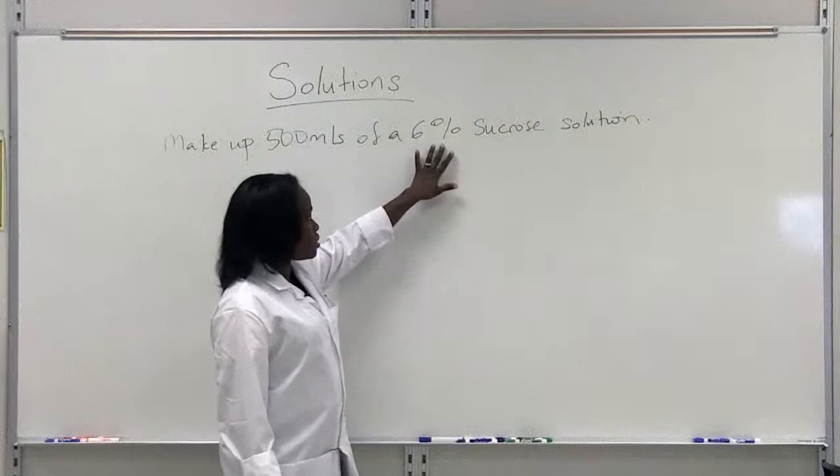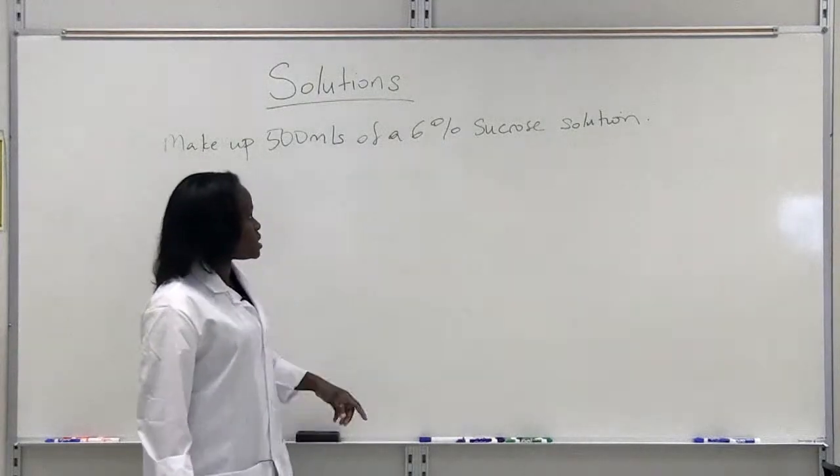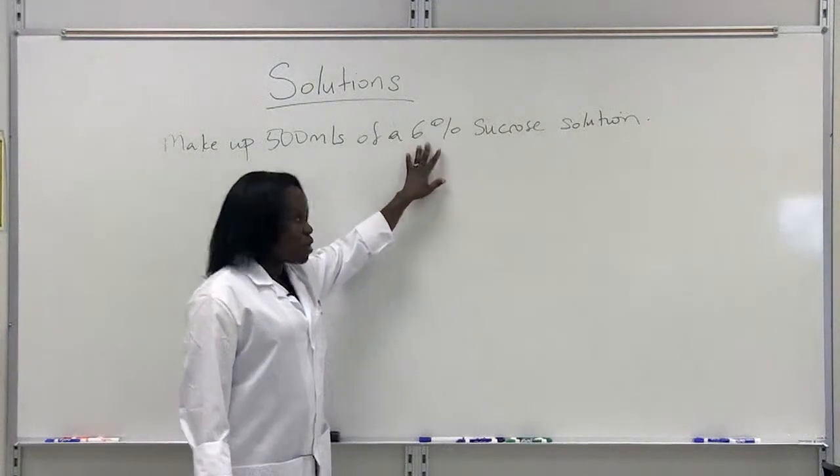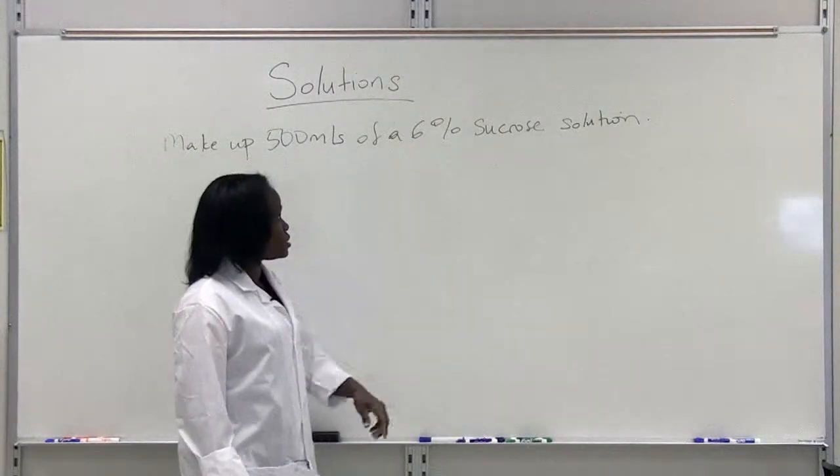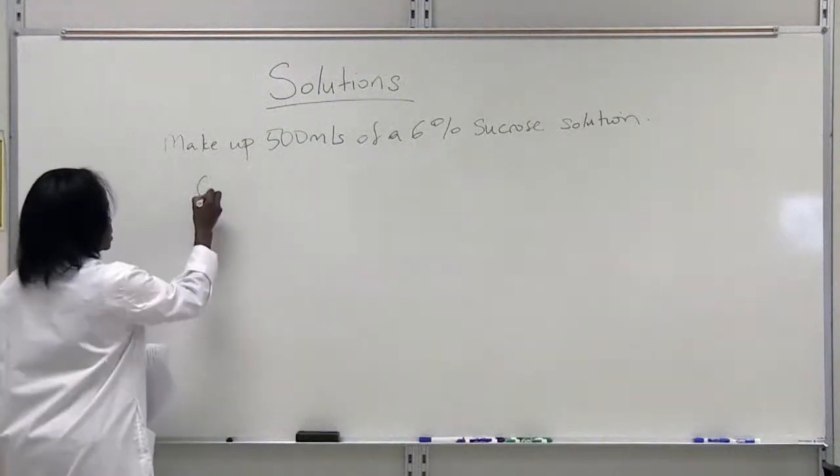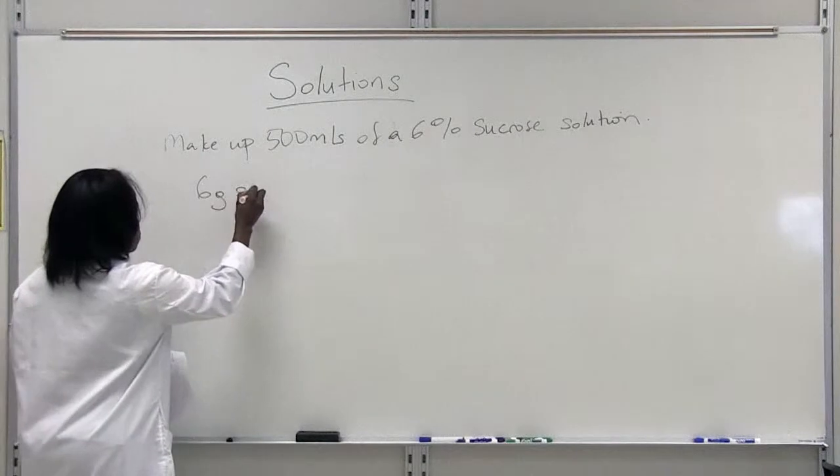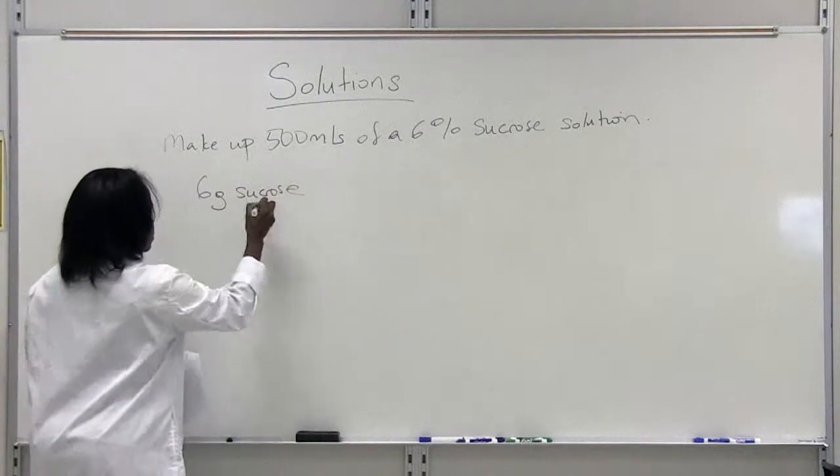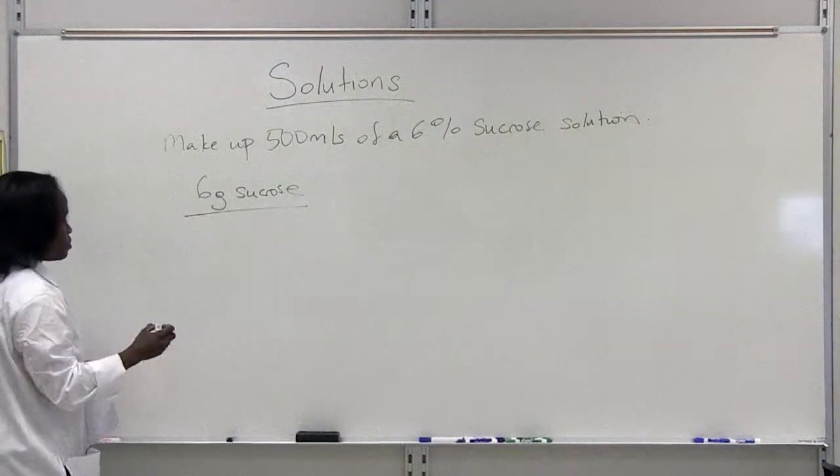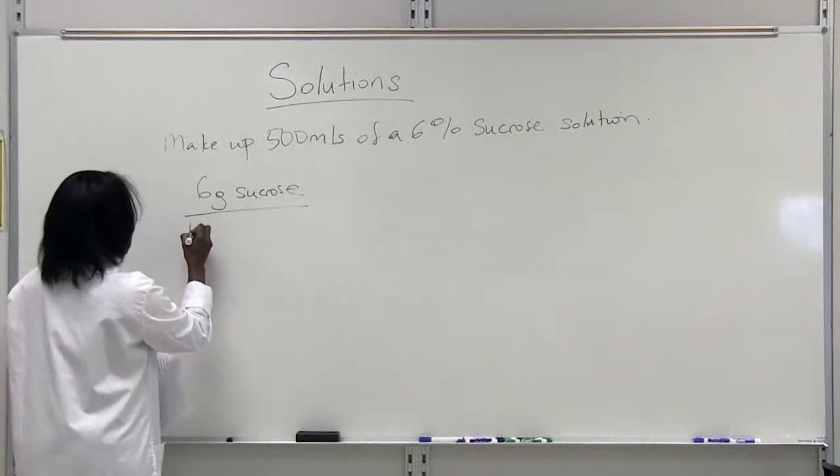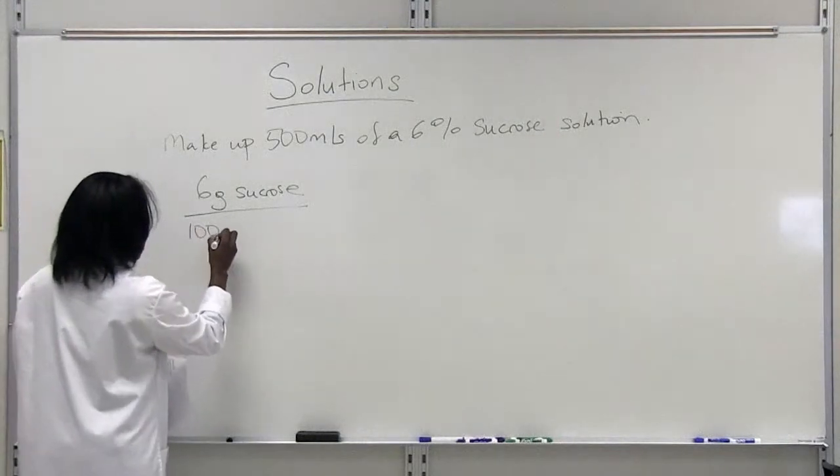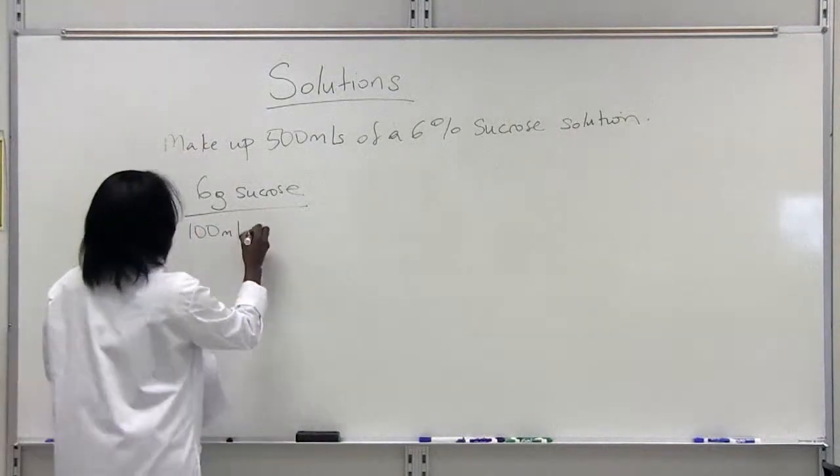This is a weight per volume concentration. It means that if you were going to make up 100 mls of sucrose solution, you would need 6 grams of sucrose dissolved in water to bring up to a final volume of 100 mls of solution.